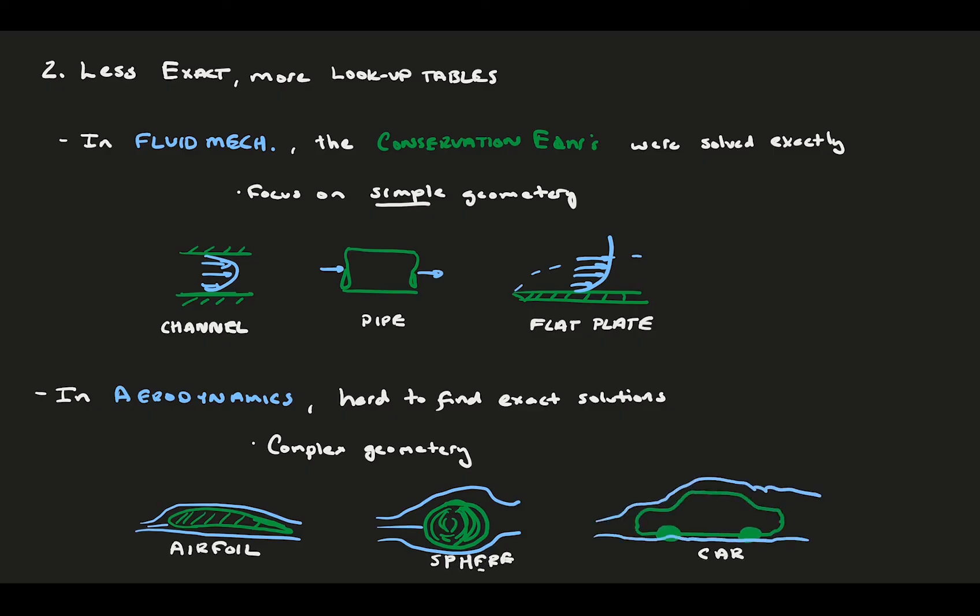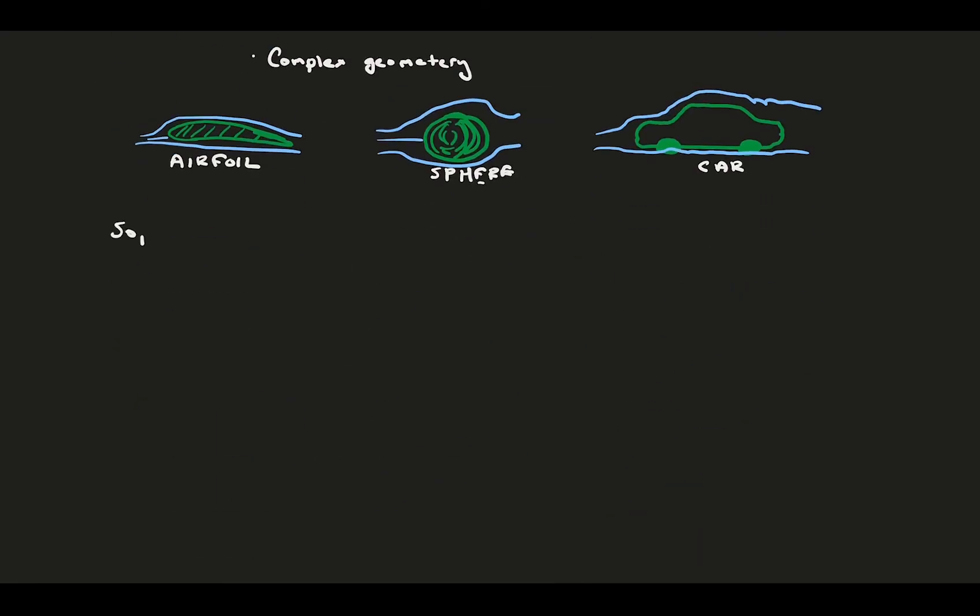So, we do a lot more looking things up in documented tables that have empirical values. For example, let's say we have a plane flying at some velocity and angle of attack that we know. How could we know what lift it's generating and making sure it can stay in flight? In this case, there's way too much going on to solve the flow field everywhere.